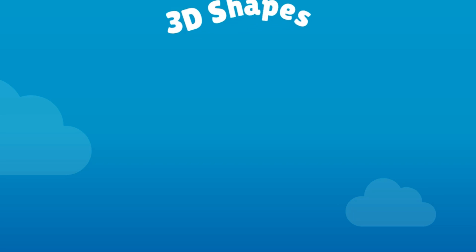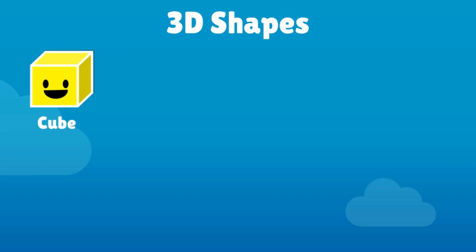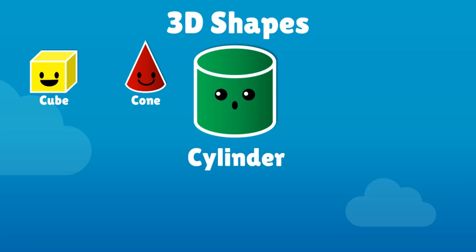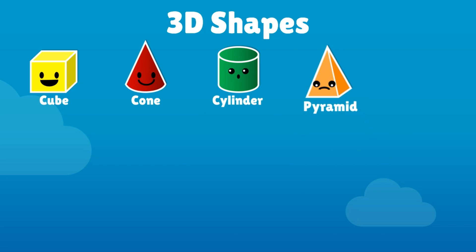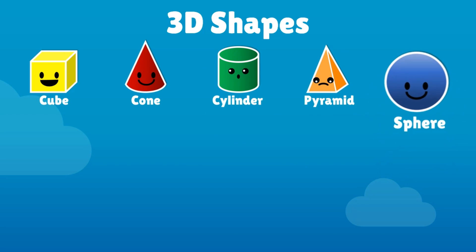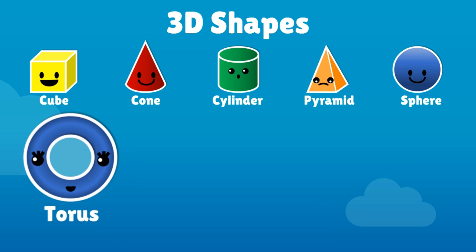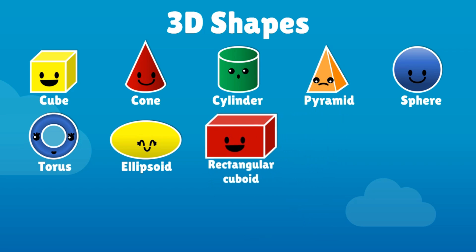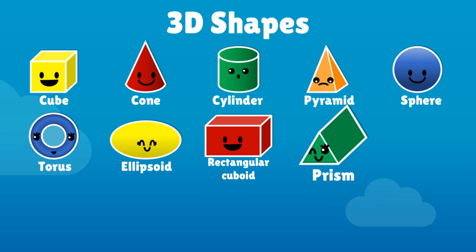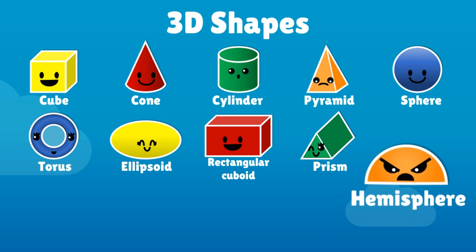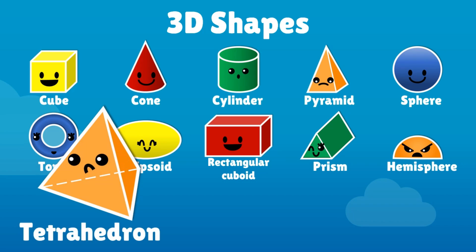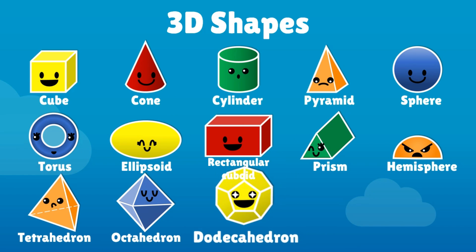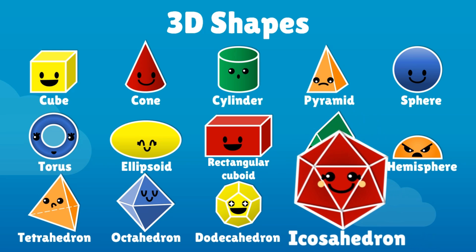3D shapes: Cube, Cone, Cylinder, Pyramid, Sphere, Taurus, Ellipsoid, Rectangular cuboid, Prism, Hemisphere, Tetrahedron, Octahedron, Dodecahedron, Icosahedron.